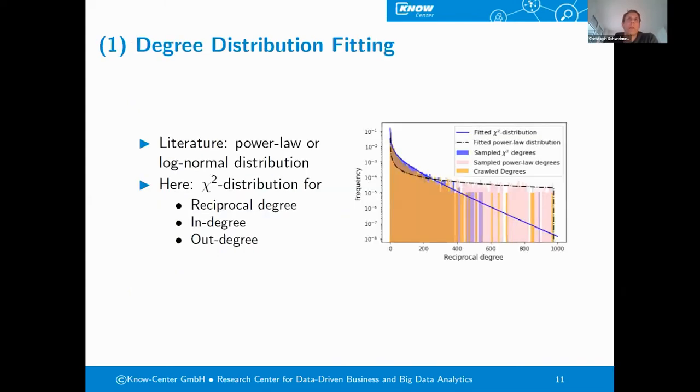In the first step, we are fitting the degree distributions. In the literature, it is often said that in social network graphs, the degrees follow either a power law or a log normal distribution. But we found that for our Twitter follower subgraphs, a chi-square distribution is actually a better fit with different hyperparameters. This is for the three different degrees, the reciprocal degree, the in degree, and the out degree, which we can also see in the figure here on the right-hand side, where the orange bars represent the crawled degrees, here especially the reciprocal degree of one of the graphs. The blue bins represent the sampled chi-square degrees, where we see that we have quite a nice overlap. We have also sampled power law degrees of a fitted distribution, where we see that they overfit, especially the high degrees, which led to a higher mean reciprocal degree.